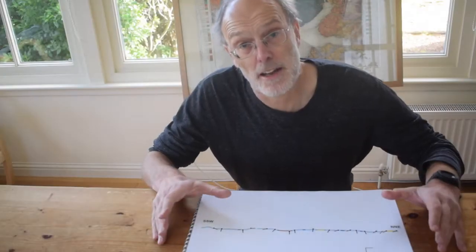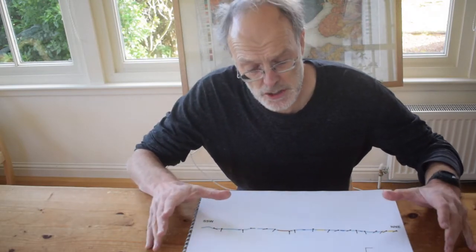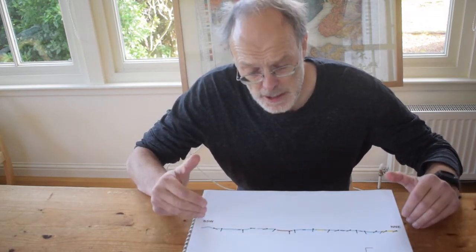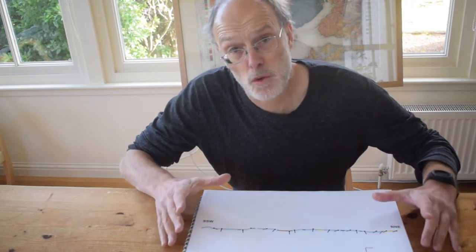So we'll take that idea and run with it when we draw our cross-section, and we're going to assume in the first instance that it's only folding that's going on and there's no faulting. So let's see if we can draw our cross-section using that basic idea, folds alone.